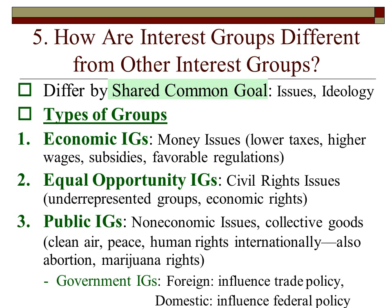Included in the public interest group category are government interest groups, which come in two flavors: foreign government interest groups and domestic government interest groups, dealing with either foreign or domestic policy. Foreign policy interest groups affect how we deal with trade policy with another country or our stance on countries with nuclear weapons. Domestic government interest groups deal with federal policy here at home.